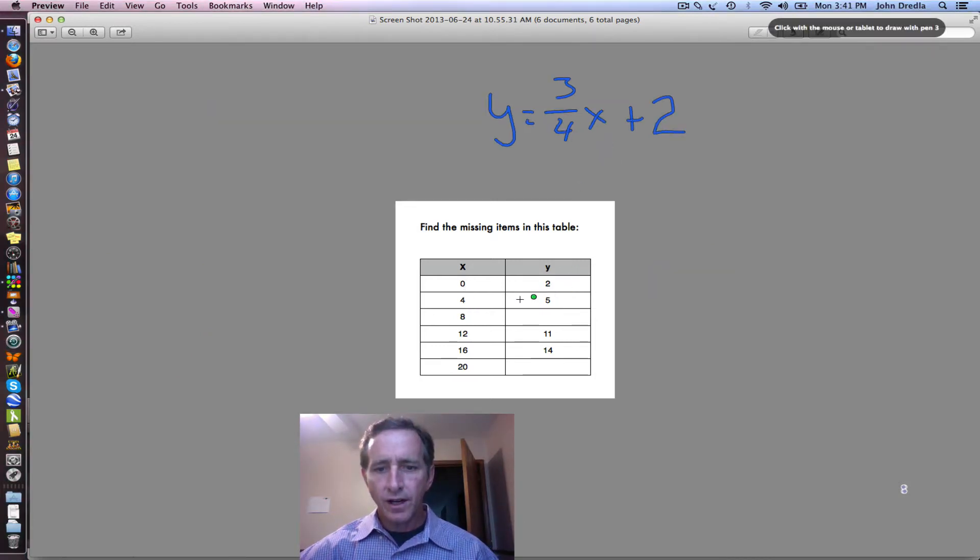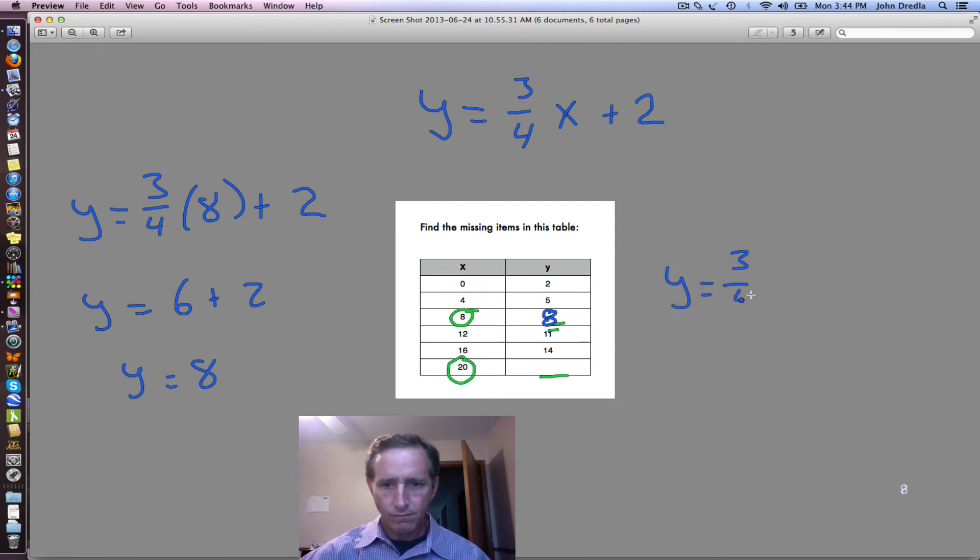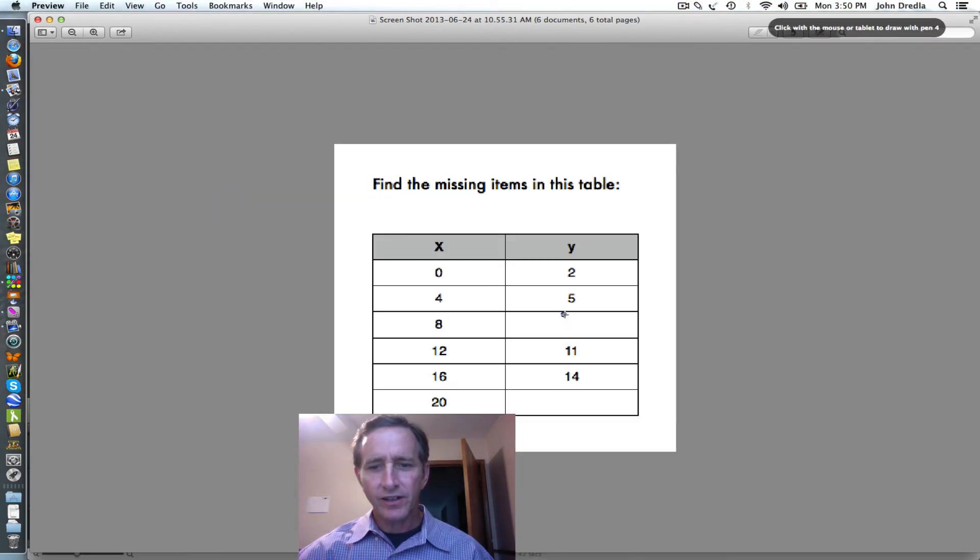To find the missing items in the table, we just plug in the x value and it will be able to solve for y. So our missing values are 8 and 17.